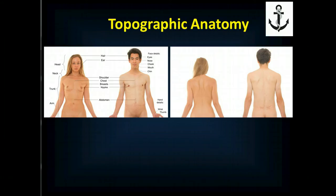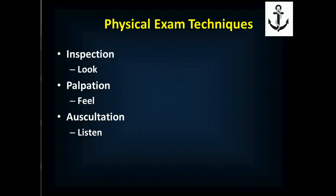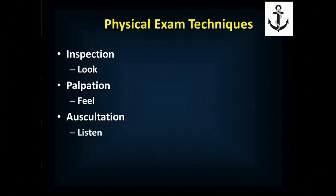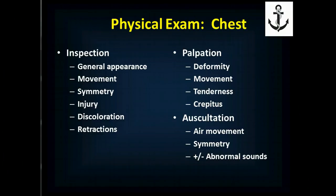Generally speaking, for any structure but particularly for the thoracoabdominal cavity, we use three physical exam techniques at a minimum: we inspect, which means we look with our eyes; we palpate, which means we feel; and we auscultate, which means we listen — typically with a stethoscope.